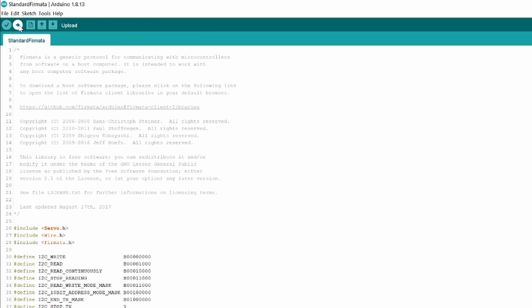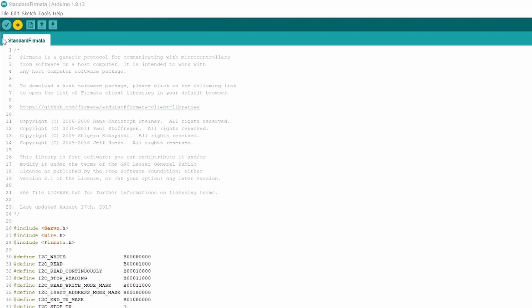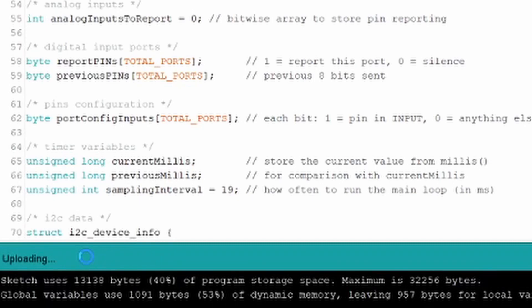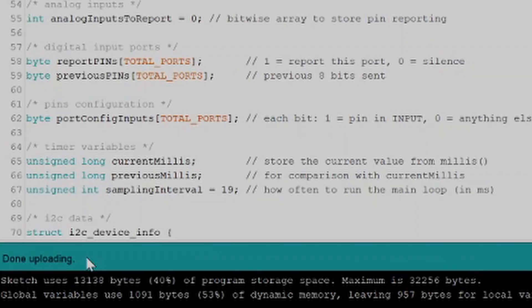After this, click the Upload button. At the bottom left, you should see the Uploading status. You will be notified once Firmata is uploaded to your Arduino board.